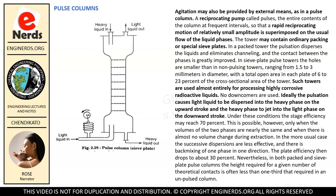No downcomers are used. Ideally the pulsation causes light liquid to be dispersed into the heavy phase on the upward stroke and the heavy phase to jet into the light phase on the downward stroke. Under these conditions the stage efficiency may reach 70%. This is possible, however, only when the volumes of the two phases are nearly the same and when there is almost no volume change during extraction. In the more usual case the successive dispersions are less effective, and there is back mixing of one phase in one direction; the plate efficiency then drops to about 30%. Nevertheless, in both packed and sieve plate pulse columns, the height required for a given number of theoretical contacts is often less than one third that required in an unpulsed column.